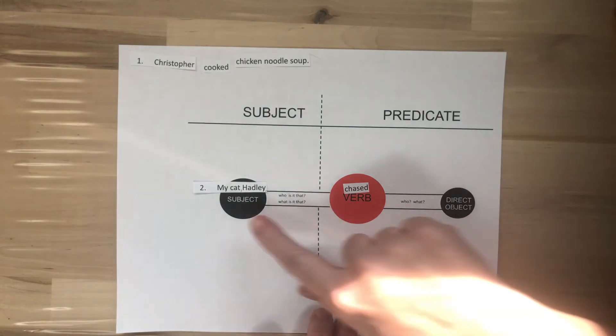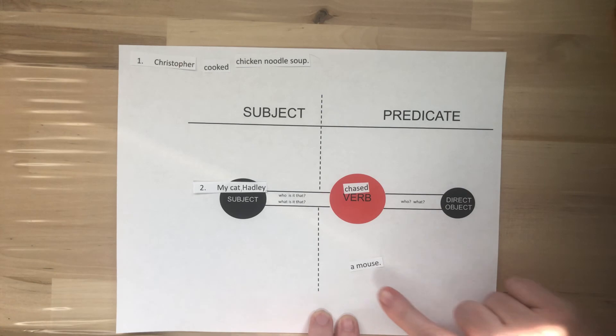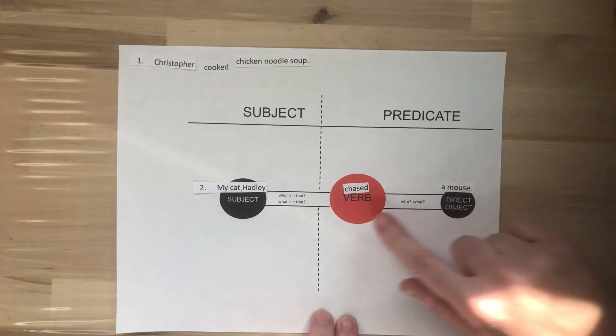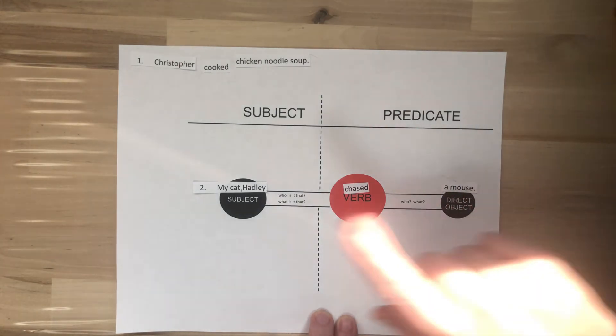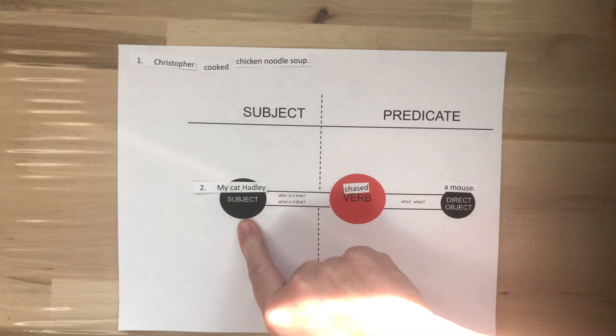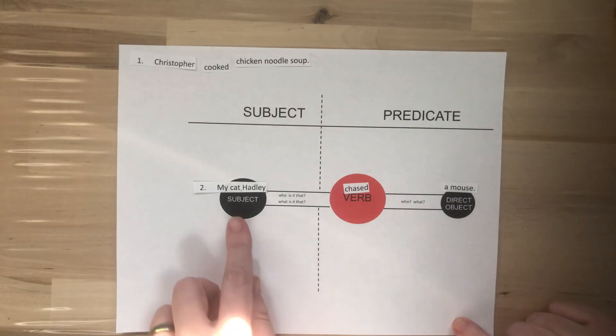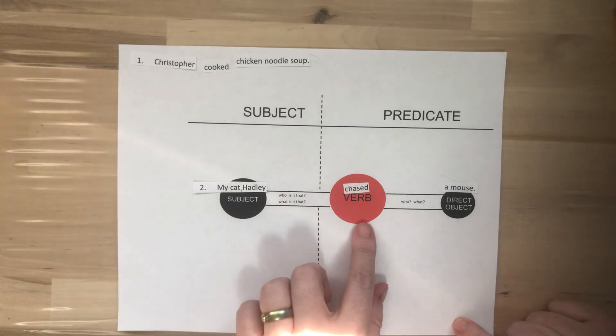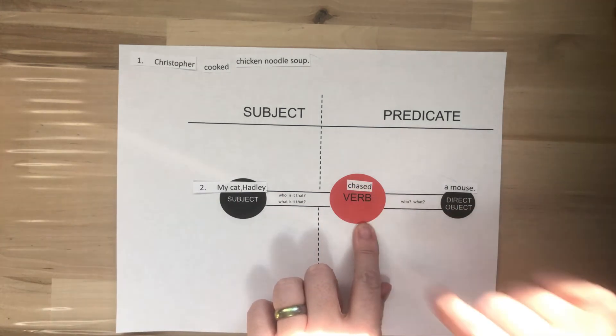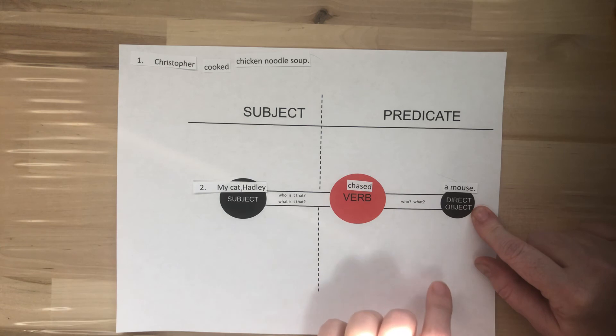Who or what did Hadley chase? Hadley chased a mouse. Hadley is our subject because that is what this sentence is talking about. We are discussing Hadley. Chased is our verb because that is our action. And the direct object is a mouse because that is what Hadley chased.